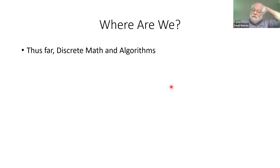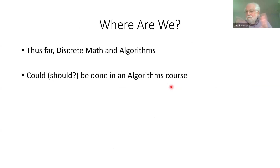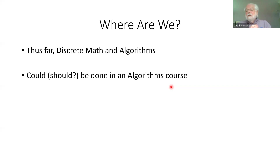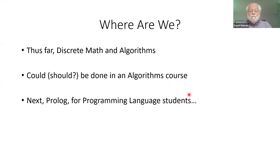So where are we? We've done discrete math — F_P and all the ways it can be defined — and we've talked about algorithms for computing membership in F_P. These last three topics might best be covered in an algorithms course. We've understood the mathematics of least fixed points, and now in an algorithms course we can write interesting algorithms for solving problems in discrete math.